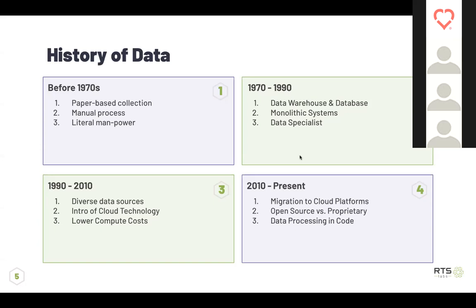From 1990 to 2010, you see the evolutionary expansion of data. You get more diverse data sources — no longer just databases and electronic files. APIs become more prevalent as a way for people to access information. You have the introduction of cloud technologies, very primitive but gaining traction. You also see lower compute costs. A lot of the barrier to entry before 1990 was that computers were still very expensive. Within the 20-year period of 1990 to 2010, the cost of computing shrinks dramatically, giving more accessibility to mid-size and smaller companies.